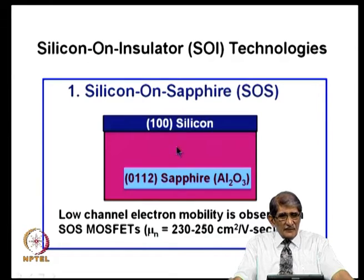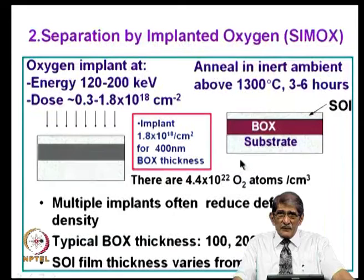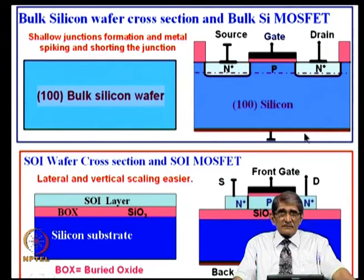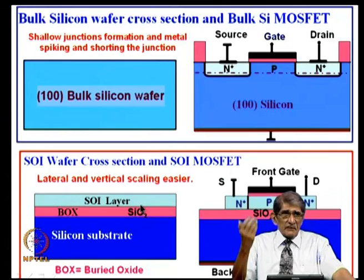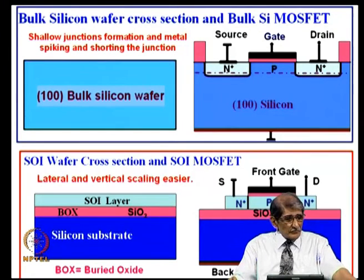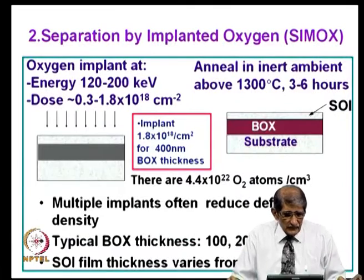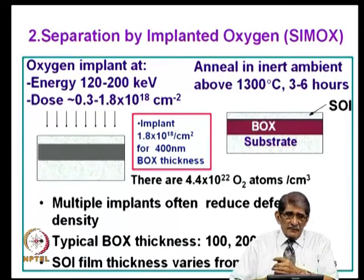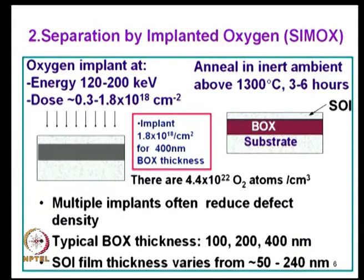For a cheaper approach, you can use silicon on silicon dioxide — choosing 1 micron or whatever thickness of oxide you like — instead of having the entire substrate as sapphire. This also reduces stray capacitance due to the thick oxide below. One popular method, used by IBM in their mainstream integrated circuits, is SIMOX — Separation by IMplanted OXygen — which creates the SOI layers called SIMOX layers.